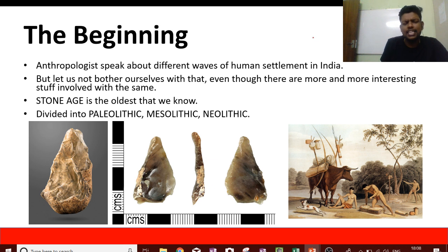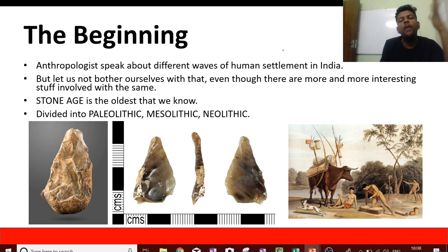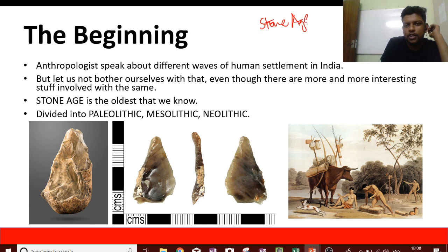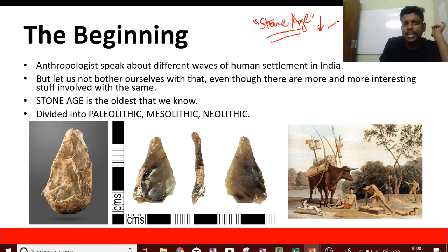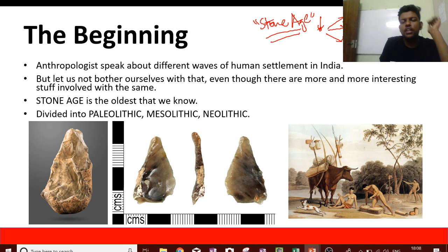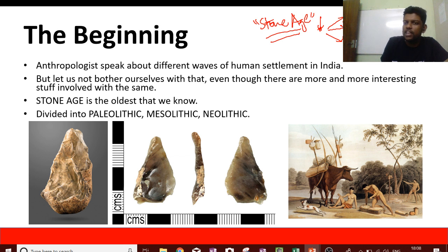India is a land with a lot of rich history. For a very long period, people have been living here. This begins with the Stone Age, which can be divided into three sections: the Paleolithic age, the Mesolithic age, and the Neolithic age. Paleo means old, so Paleolithic is the old stone age, Mesolithic is the middle stone age, and Neolithic is the new stone age.